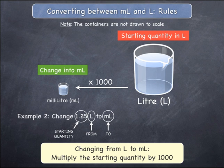The rule states that you must multiply the starting quantity by 1000 to change from litres to milliliters. Referring back to the example, the starting quantity is 1.25 and you must multiply this by 1000, giving 1250, which is the answer in the new unit of milliliters. That is, 1.25 litres equals 1250 milliliters.